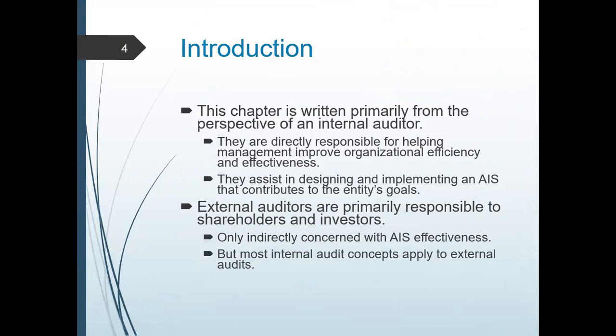They are directly responsible for helping management improve organizational efficiency and effectiveness — and who are they? It is your internal auditor. Your external auditor will check the fairness of your financial statement — by checking your system, by checking if you complied with the different related standards in preparing your FS. As for the internal auditor, their role is to help the organization check organizational efficiency and effectiveness, and they also assist in designing and implementing the AIS audit that will be conducted by your external auditor.